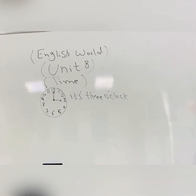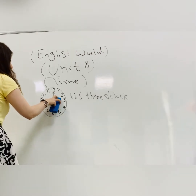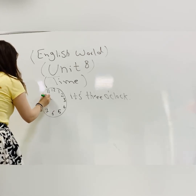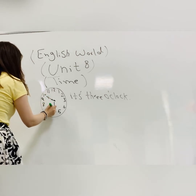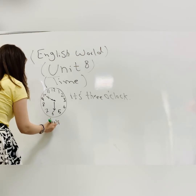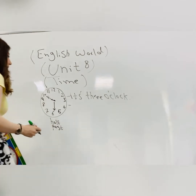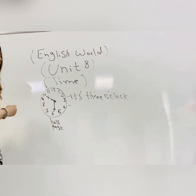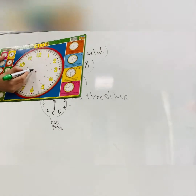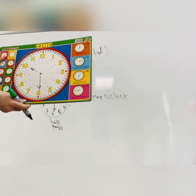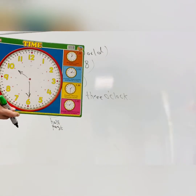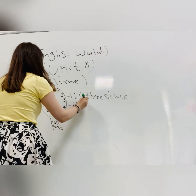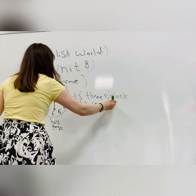So if we want to make another example, this time we use the half — we use number 6, which is the half. The long line goes to 6, we call it 'half past.' For example, if the short line is on 10 and the long line is on 6, we can say it's half past 10. Also, if the short line is on 4 and the long line is on 6, we call it half past 4.